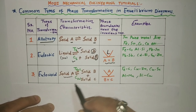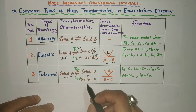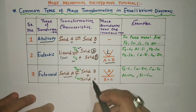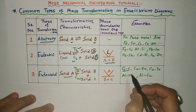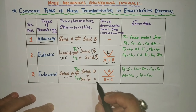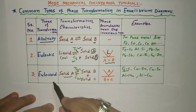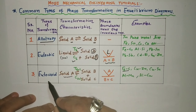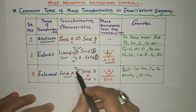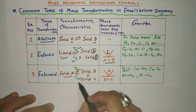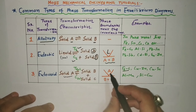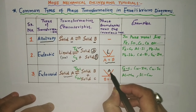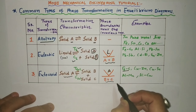Eutectoid transformation is used in making steel. You will find relevant regions in the iron-carbon diagram for steel-making processes — hypo-eutectoid, eutectoid, and hyper-eutectoid steels. In the case of eutectoid steel, there is a specific temperature and specific composition. Symbolically, solid A converts into two more solids.